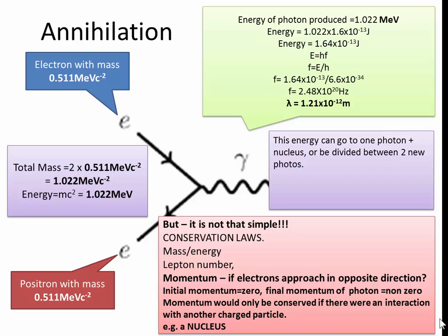So this energy can go to one photon and a nucleus. Or it could be divided between two new photons instead. What would be the wavelength of the photon if it were to produce two photons? What would each wavelength be? This is a paper one type question. Knowing that one photon would have a wavelength of 1.21 times 10 to minus 12, what would it be for two photons with the same energy? The wavelength would be twice as much. Because you have half the energy, which means half the frequency, which means double the wavelength.